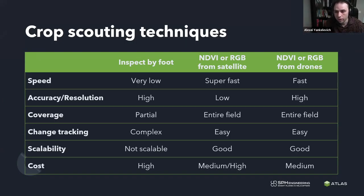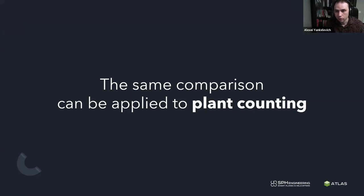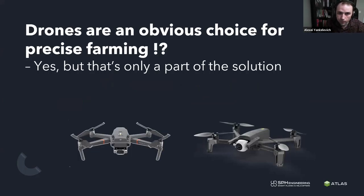The cost of the data you acquire with drones I would say is medium. Besides crop scouting — which we identified as checking the status of the plant and the soil — there is another task that can be solved easily with aerial photography and drone technology: plant counting. For plant counting, we can apply absolutely the same logic and the same comparison of characteristics. The benefits are very similar because of the similarity in data acquisition and data processing procedures. Drones are an obvious choice for precise farming.